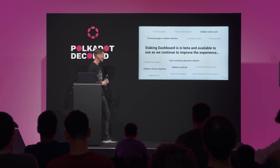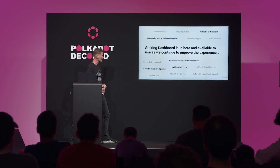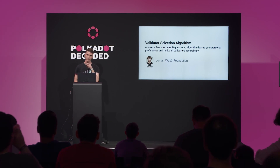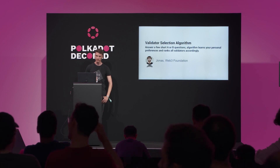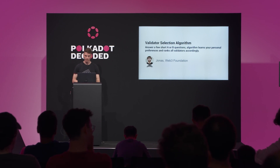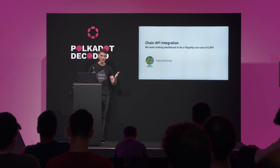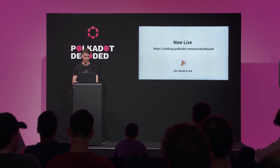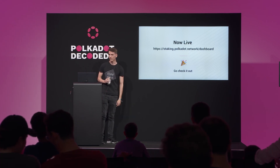Staking dashboard is in beta right now. We'll continue to develop and improve. I've highlighted some validator-focused things — that will probably be the focus of our next sprint, really focusing on validator discovery and showing validators we care. We'll be implementing the validator selection algorithm deeply into the dashboard to improve the discovery process. For more on that, go to Jonas's talk. Chain API will unlock big potential for a multi-chain front-end world — we want staking dashboard to be another flagship use case of Cappy. It's now live on Polkadot Network, which is quite a big deal — it's the first major end-user-facing application on Polkadot Network. It's been great to work with the Web3 guys, and we want to do more of it in the future. Go check it out.